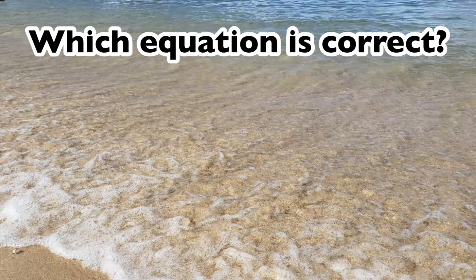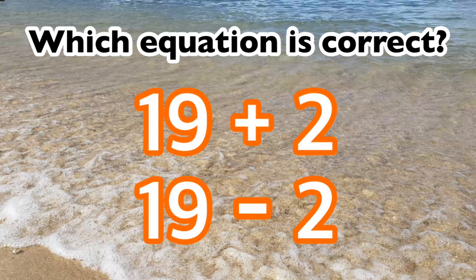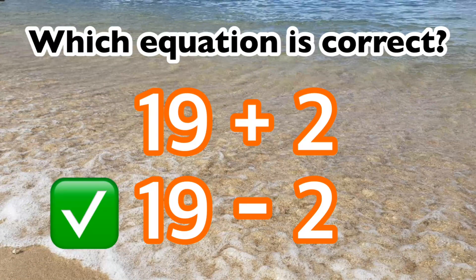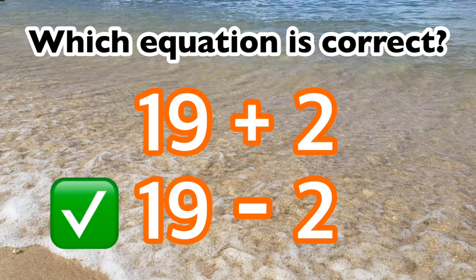Which equation is correct, 19 plus 2 or 19 minus 2? The correct equation is 19 minus 2.